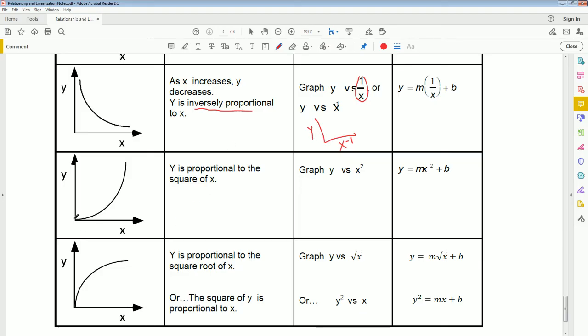Next one, if it curves like this, this is called squared of x. So this, to graph it, the x axis, you just square it, and the y axis remains the same. Then this, you're going to linearize it. And this one originally will look like y equals to mx squared plus c.